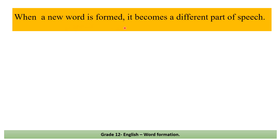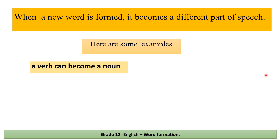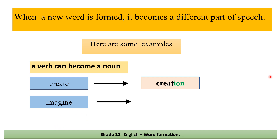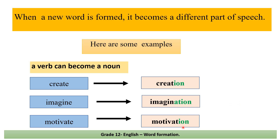When a new word is formed, it becomes a different part of speech. Here are some examples. A verb can become a noun. 'Create' (a verb) → 'creation': we omit 'e' and add '-ion'. 'Imagine' → 'imagination': we omit 'e' and add '-ation'. 'Motivate' → 'motivation': we omit 'e' and add '-ion'.